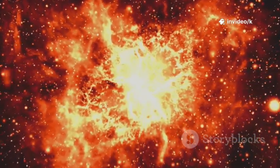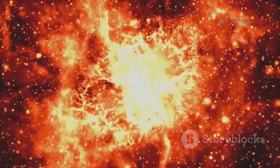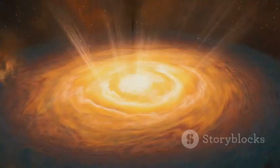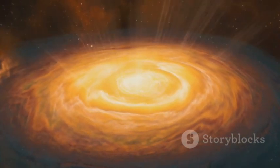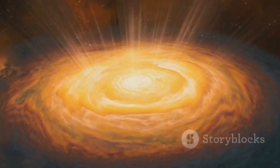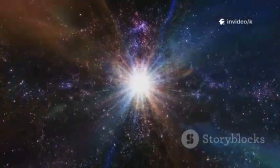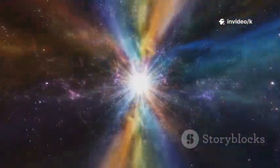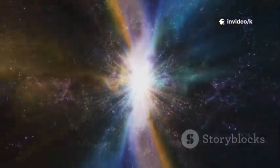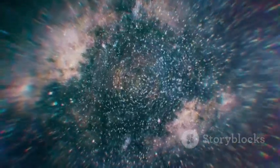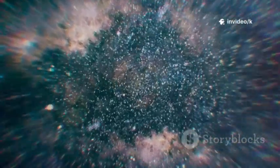Betelgeuse isn't just an old star. It's a survivor of a cataclysmic event. Its rapid spin and the surrounding dust are echoes of that ancient merger. This theory ties together all the mysteries—the dimming, the dust, and the fast rotation. Betelgeuse is no longer a simple single star. It's a complex system with a violent past. The clues were there all along, we just needed the right story to connect them.